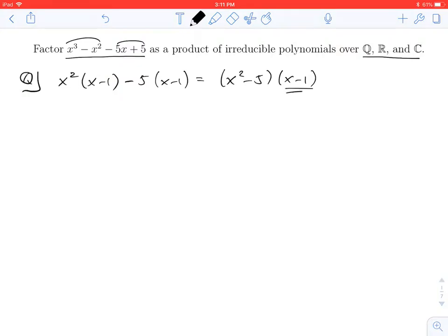Now, the x minus 1, that's already irreducible, it's linear. The x squared minus 5, well, it has two roots, root 5 and negative root 5, neither of which are rational numbers. So we actually know that this is already irreducible. And so this is going to be our factorization over Q.